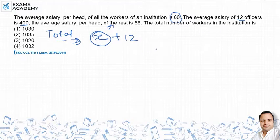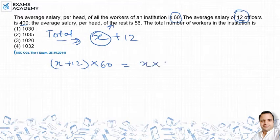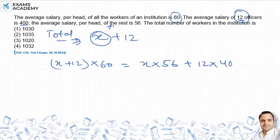The average salary per head of all the workers — we can set up the equation. Let X be the number of remaining workers. The total salary equals X into 56, which is the average salary of the rest, plus 12 into 400, which is the officers.